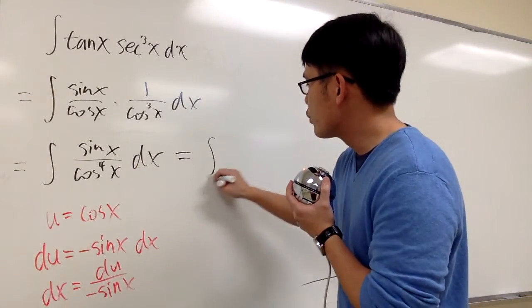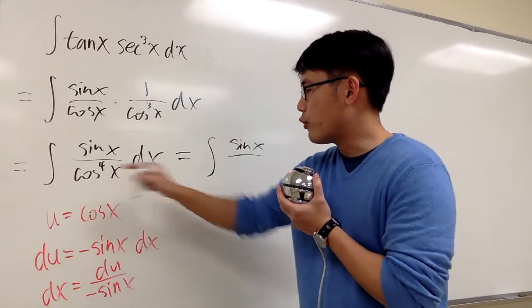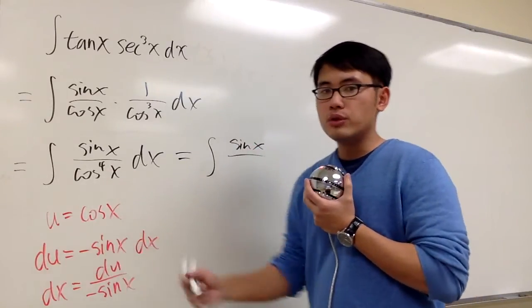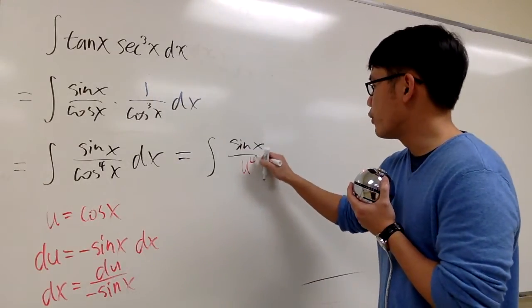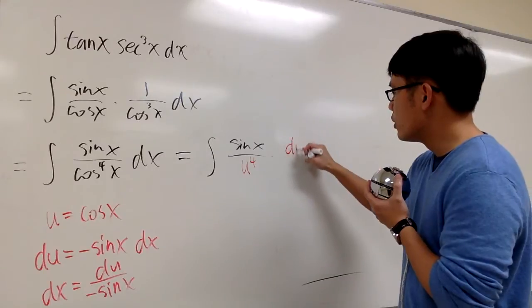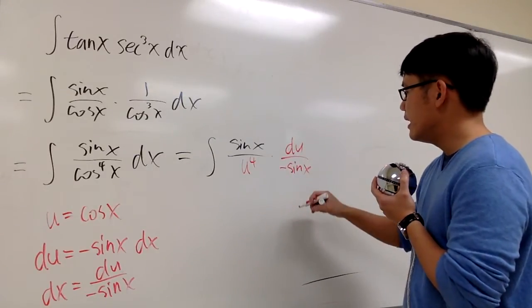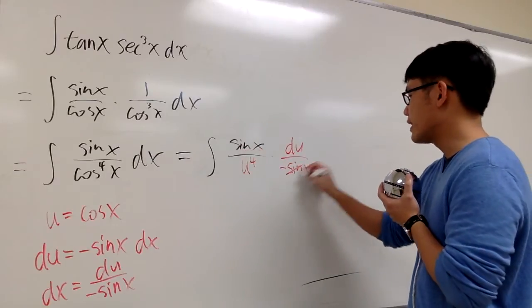Anyways, this will be the integral sine x stays on the top, over cosine to the fourth power, well, cosine is u, so it's the same as saying u to the fourth power, and dx is the same as du over negative sine x. And as you can see, the sine x and sine x will cancel each other out.